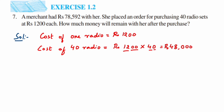The merchant has rupees 78,592. Out of this amount, she spent 48,000 on the radios. To find how much is left, we need to subtract these two numbers to get the remaining amount.